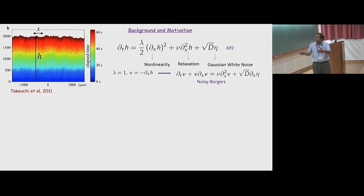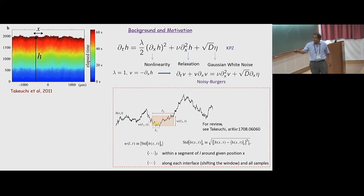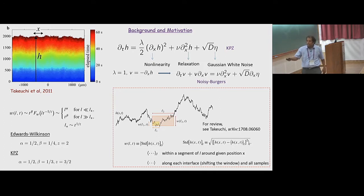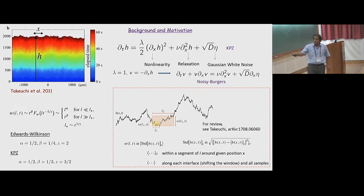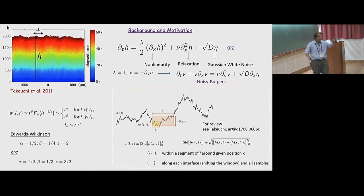Typically what is measured in experiments is the width function, extracted from height H(x,t) data. What is essentially expected from KPZ is exponent α = 1/2 — the width function goes as this expression, and for large enough length it becomes independent of length. Then β = 1/3. These are the kinds of exponents they look for in experiments once they have height data.